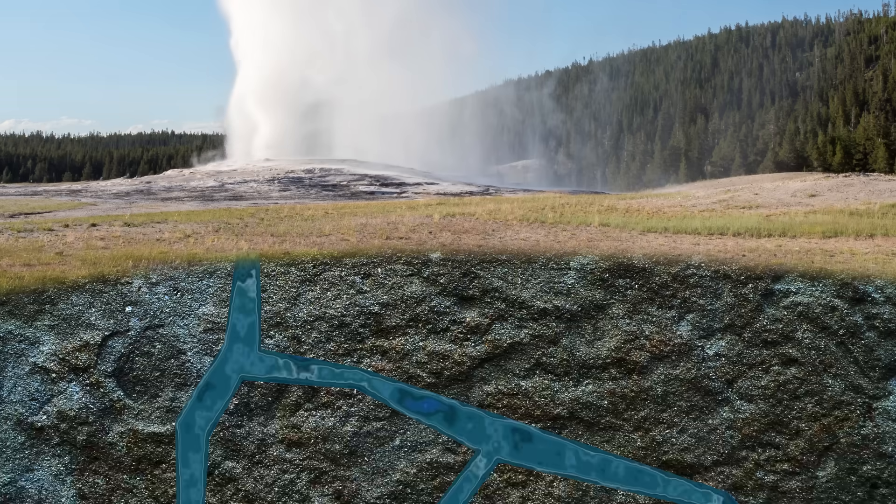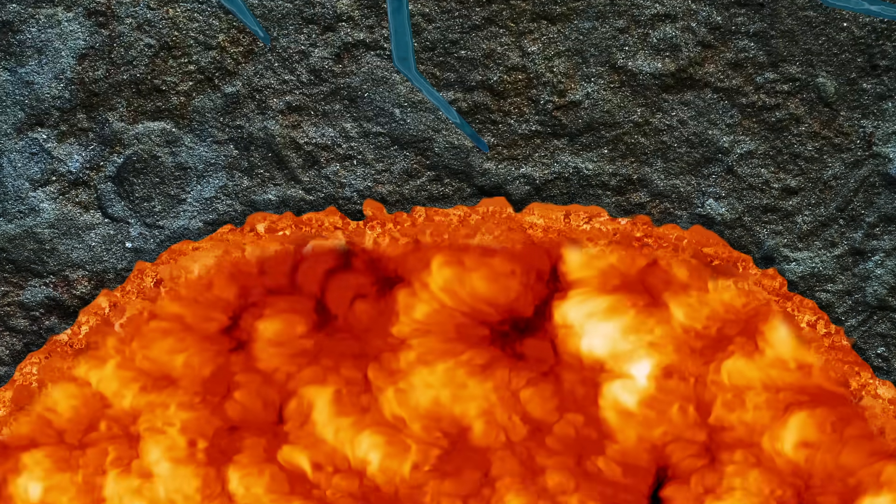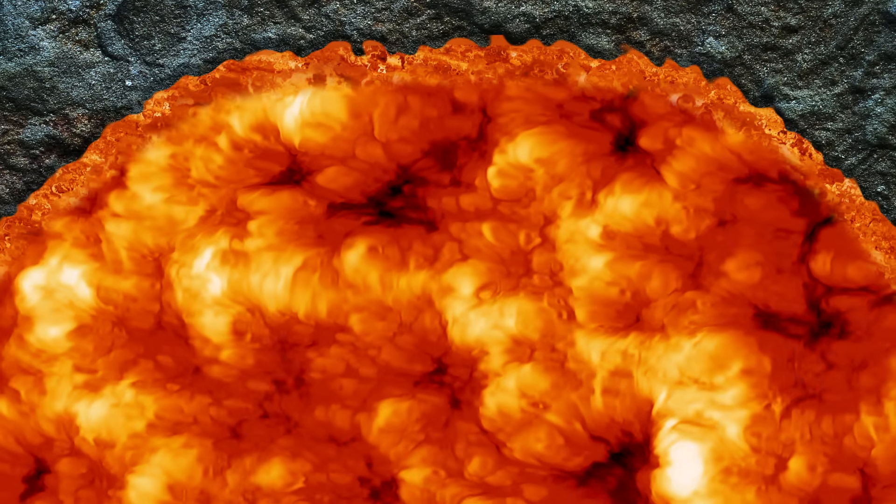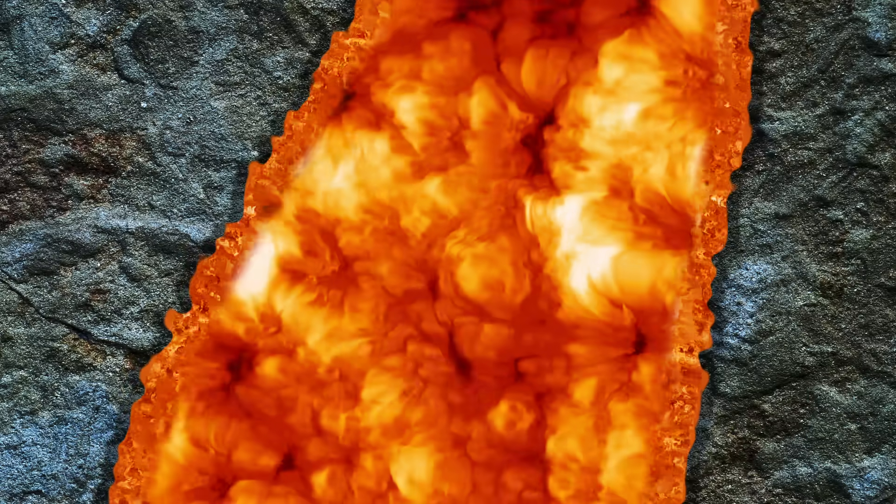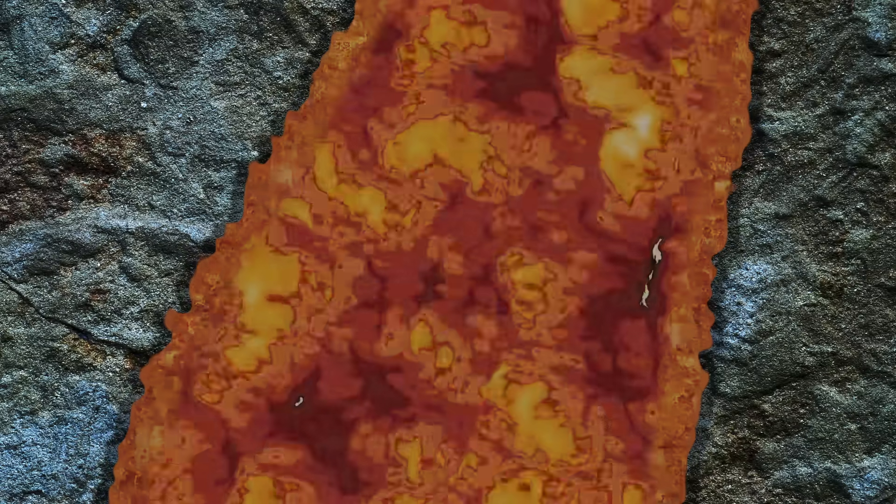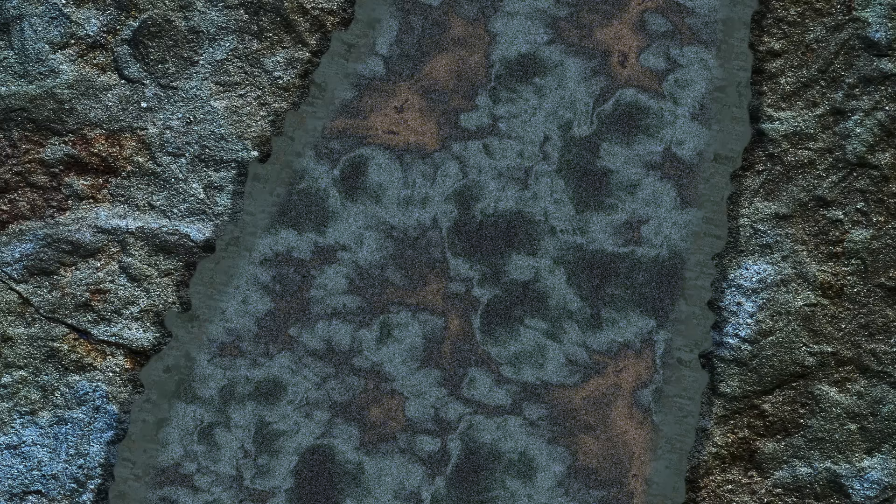Deep beneath the geysers and hot springs of Yellowstone caldera lies a magma chamber, produced by a hot spot in the Earth's mantle. As the magma moves towards the Earth's surface, it crystallizes to form young, hot, igneous rocks.